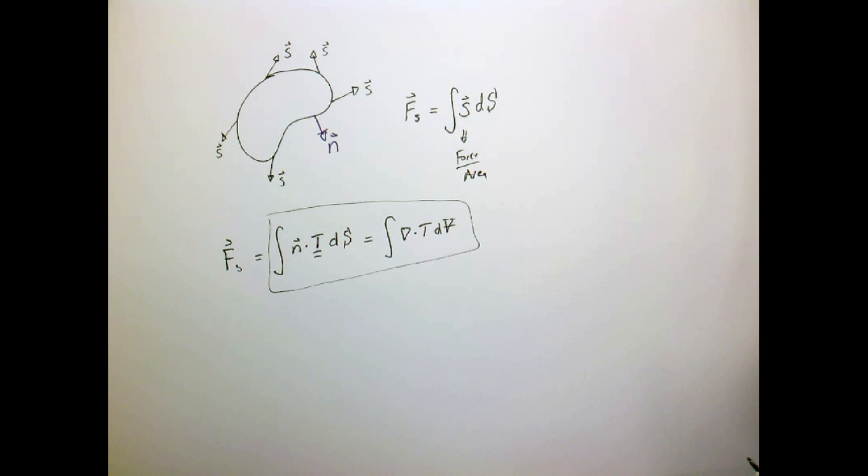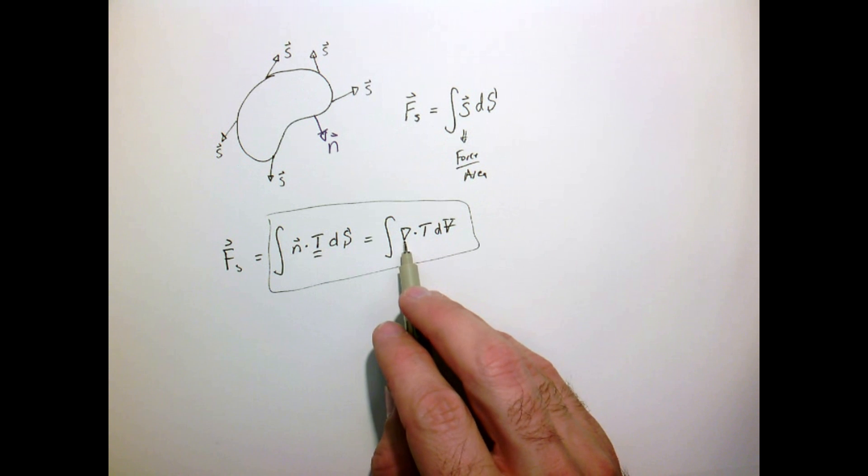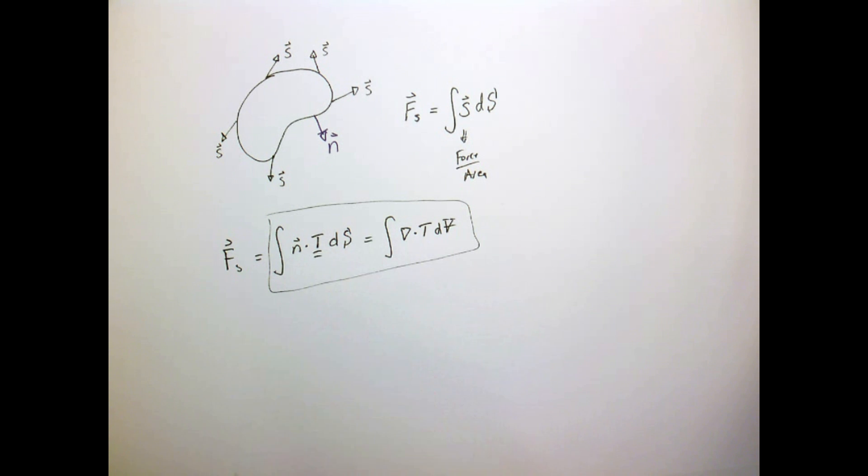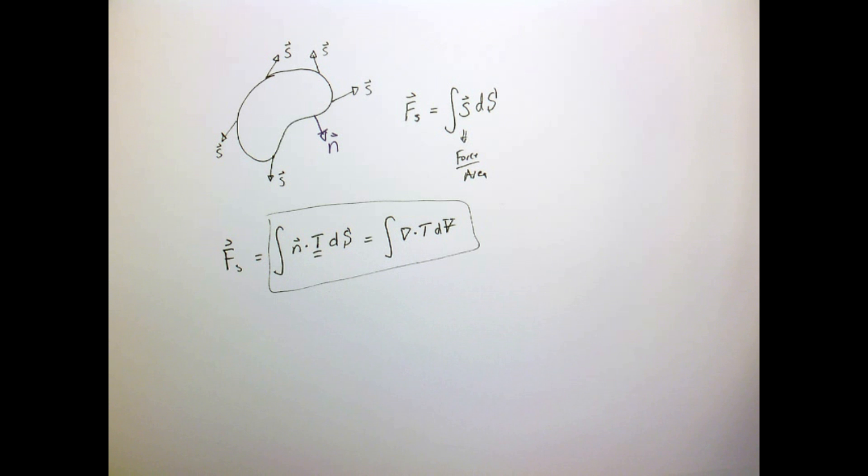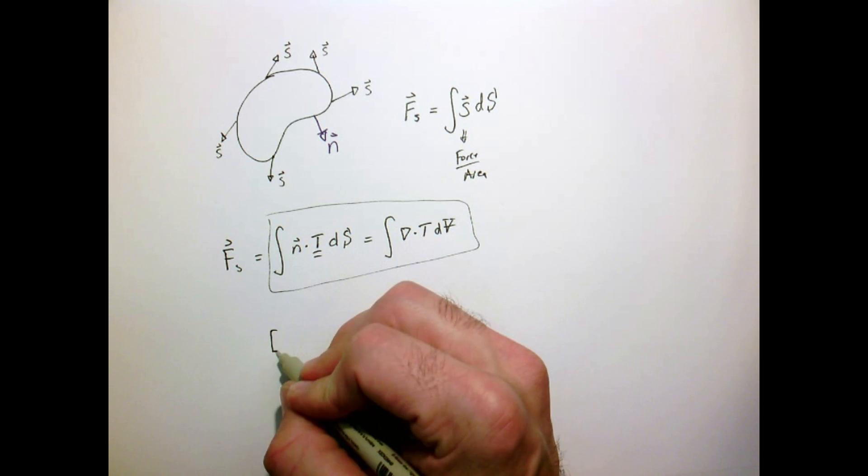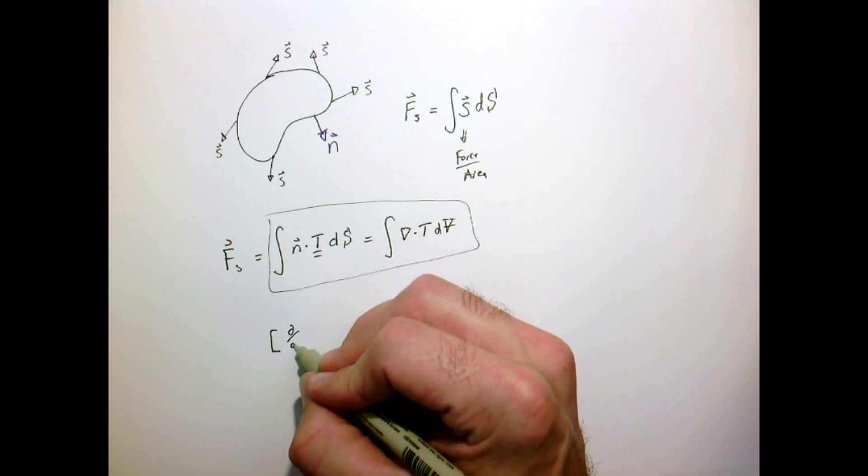And if we want to know how to calculate the divergence of the stress tensor, well, if we remember this gradient operator, the del operator, right, if we just write it out as a vector, we can do exactly the same thing when we looked at dotting a tensor with a normal vector.